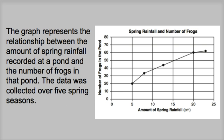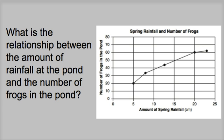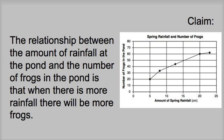We're going to use the same example from Part 1, where a graph represents the relationship between the amount of spring rainfall recorded at a pond and the number of frogs in that pond. The data was collected over five spring seasons. The question was: what is the relationship between the amount of rainfall and the number of frogs? You really couldn't write a claim until you analyzed the evidence first, so evidence is often what students look at first. The claim we came up with is: when there is more rainfall, there will be more frogs.